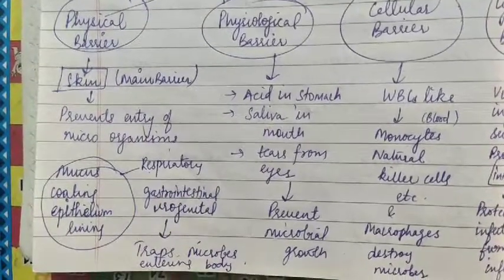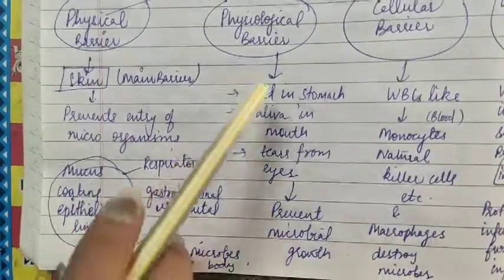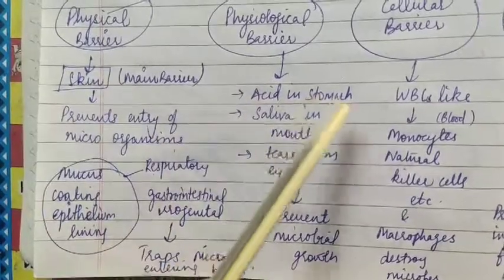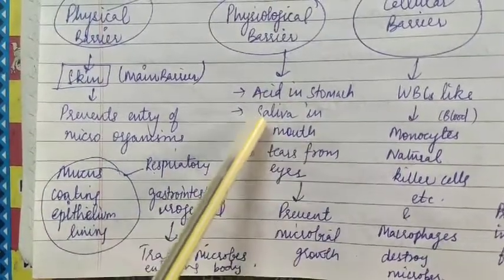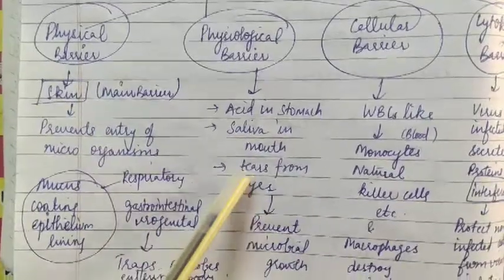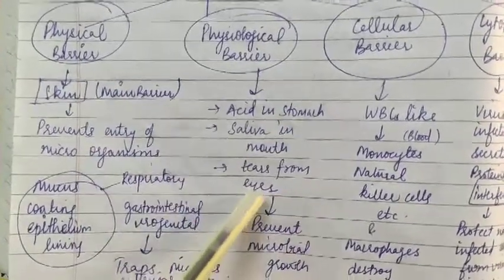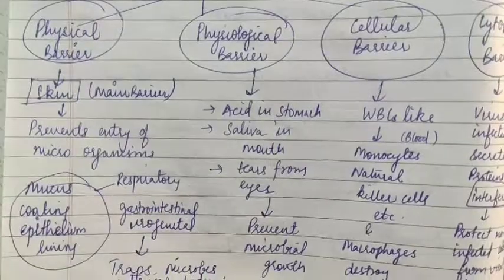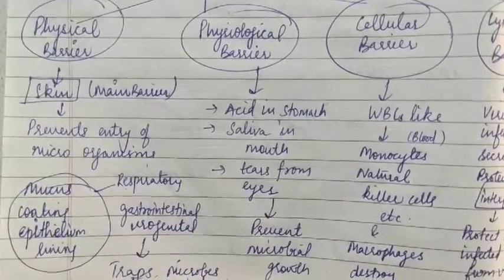The physiological barrier includes acid in our stomach, saliva in our mouth, and tears in our eyes. These are all physiological barriers — they prevent microbial growth.